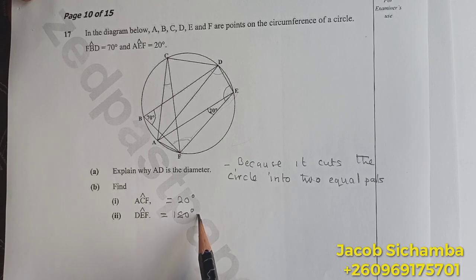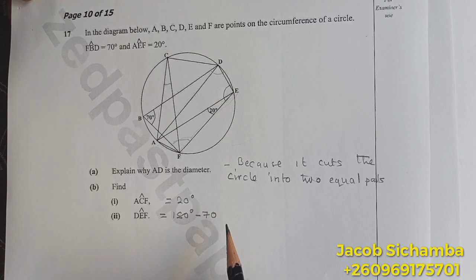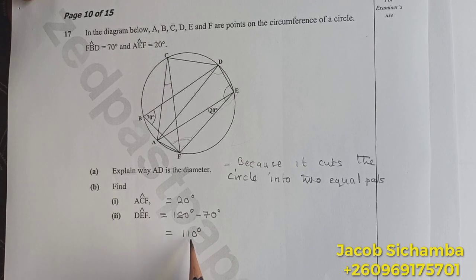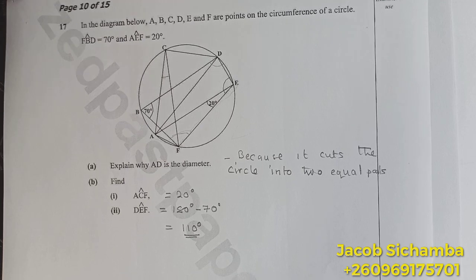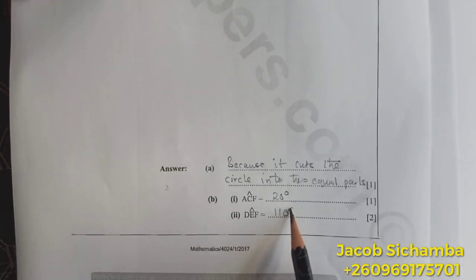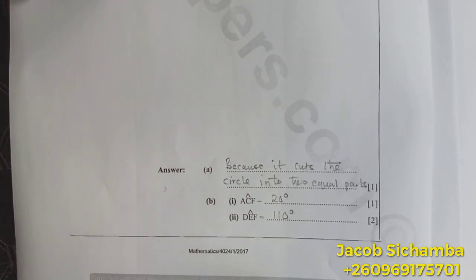We will say 180 degrees minus 70 degrees, and this will give us 110 degrees. Our answer here is 110 degrees. Thank you.